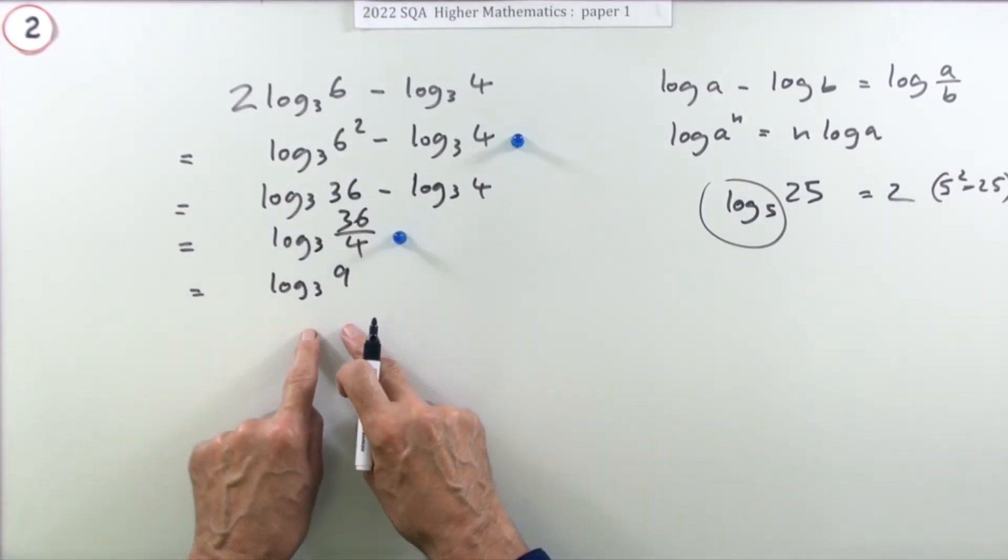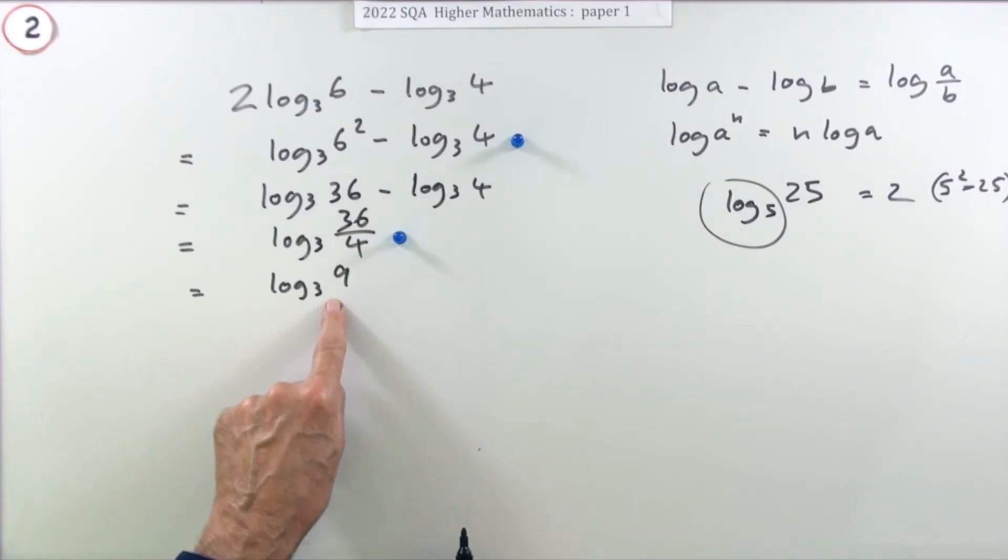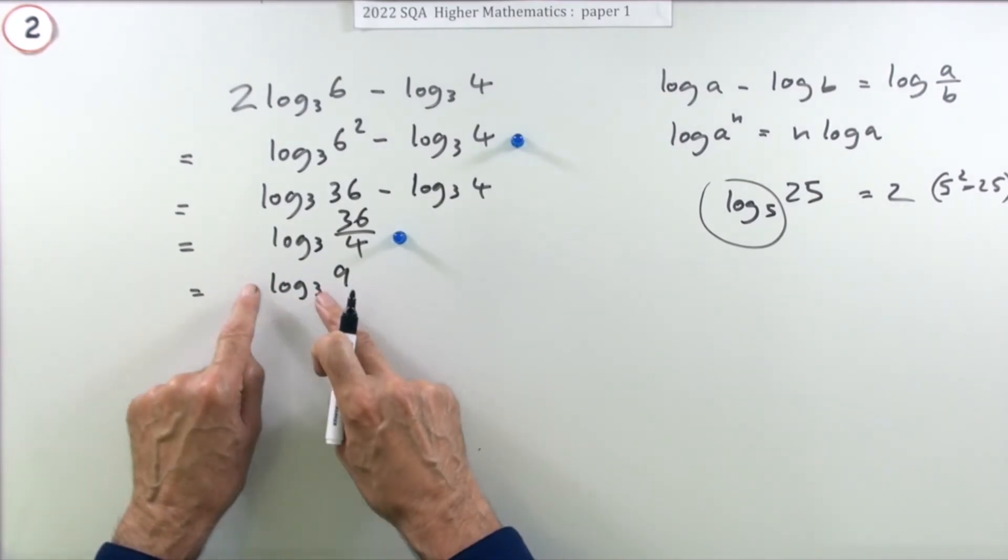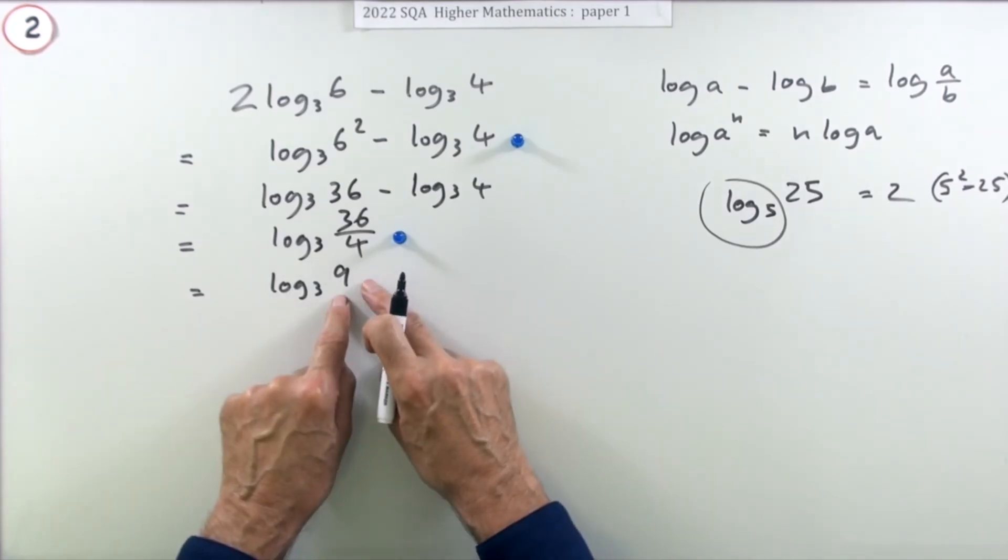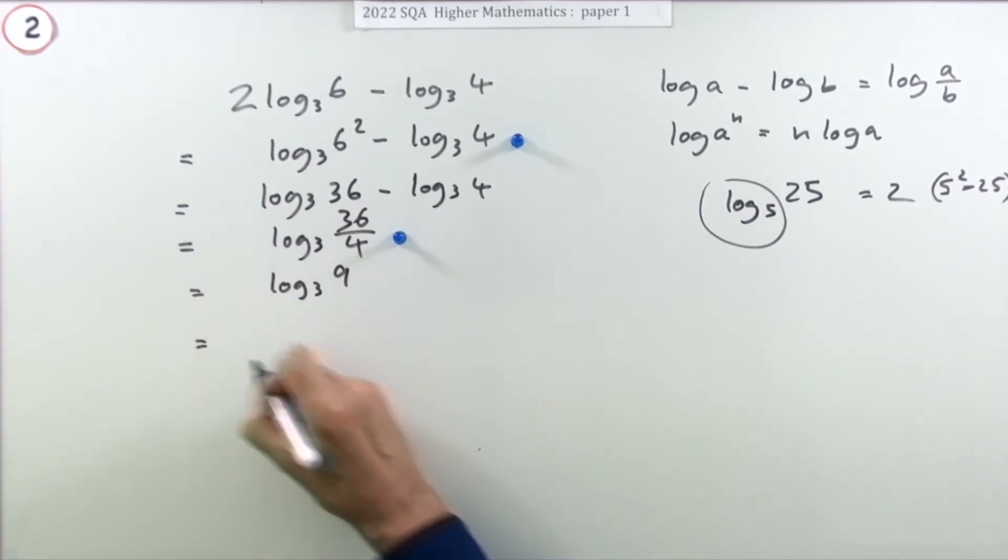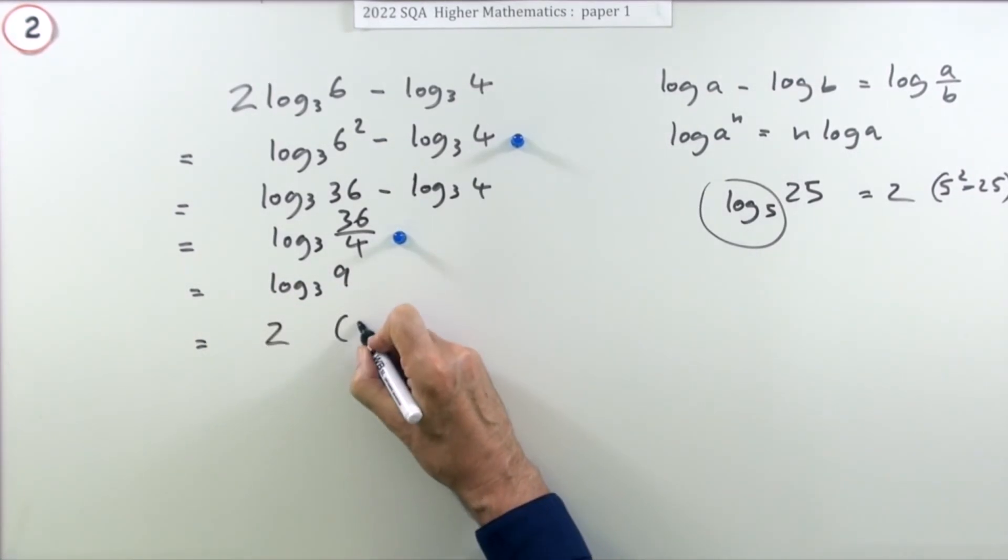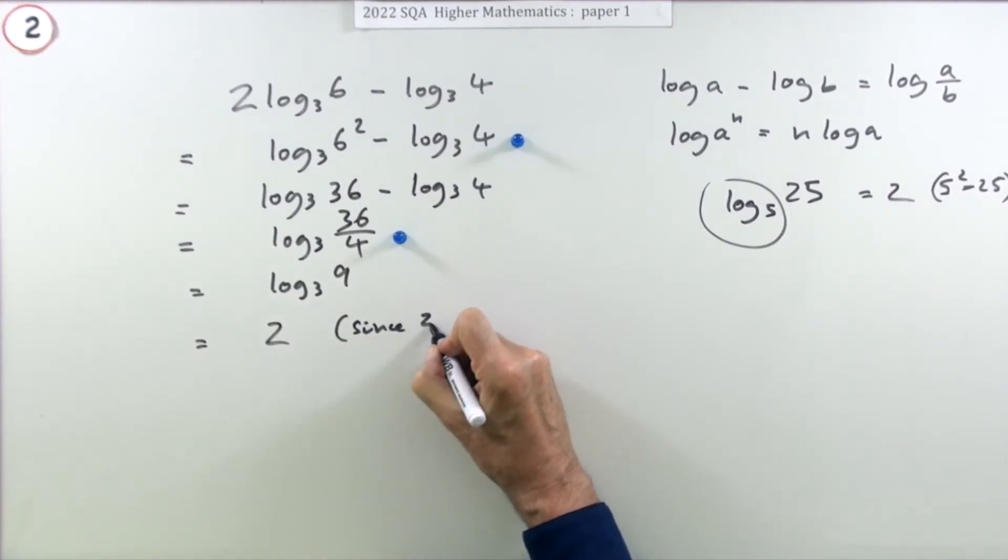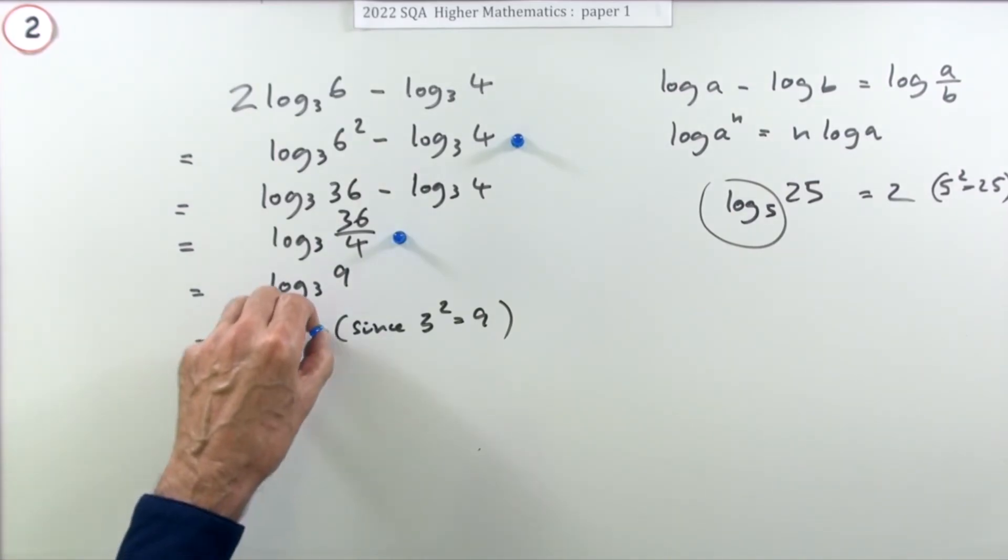Now the final mark's just for the answer, which you could just state because you can use observation just to say what power of 3 is 9 - it's 2. You could always give the reason: since 3 to the power 2 is 9, and that gets the last mark.